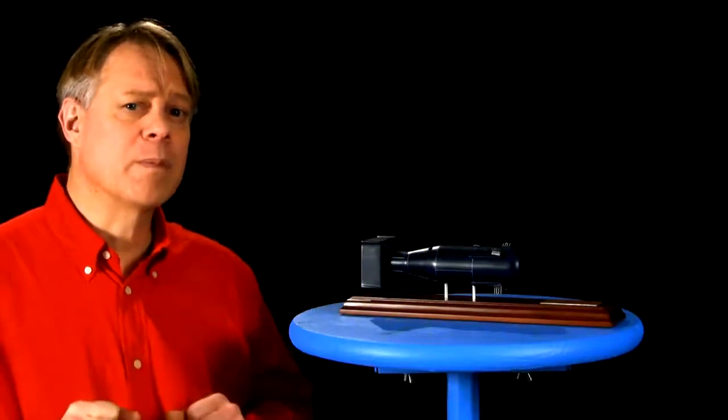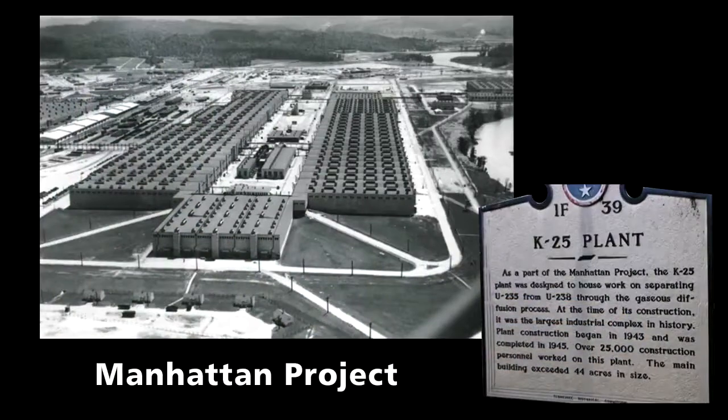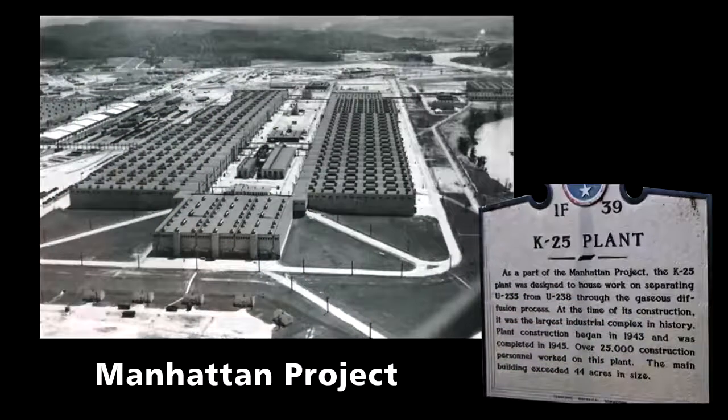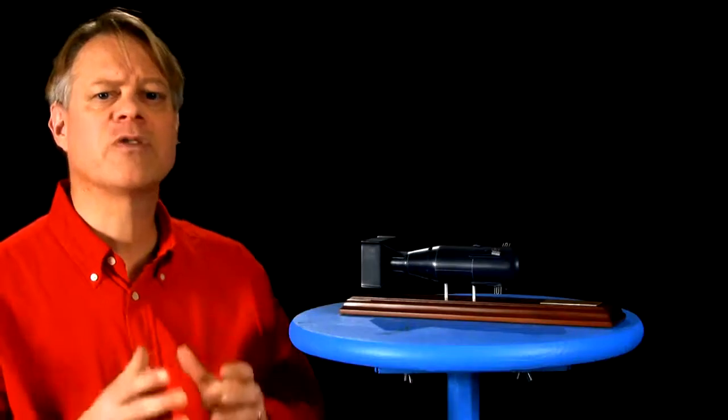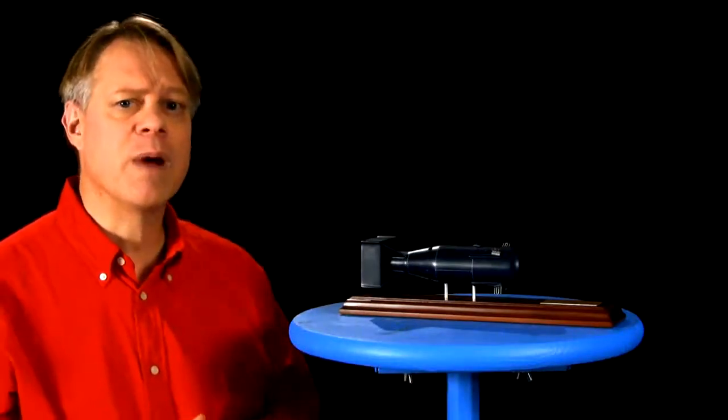Enriching the uranium for the first atomic bomb required a diffusion plant that covered over 40 acres. It housed a maze of 100 miles of piping. These diffusion plants use great amounts of energy to run compressors generating the pressures needed, and the energy to heat gas flowing through the miles of tubing.